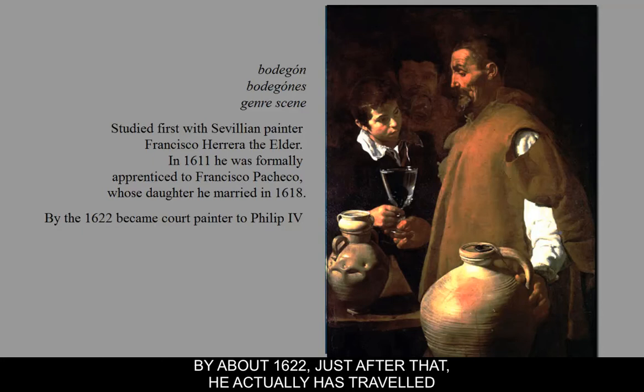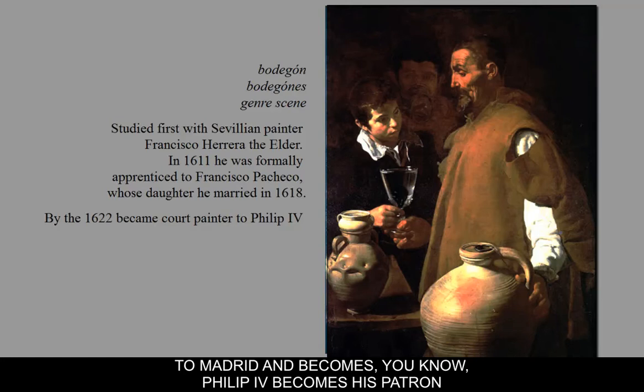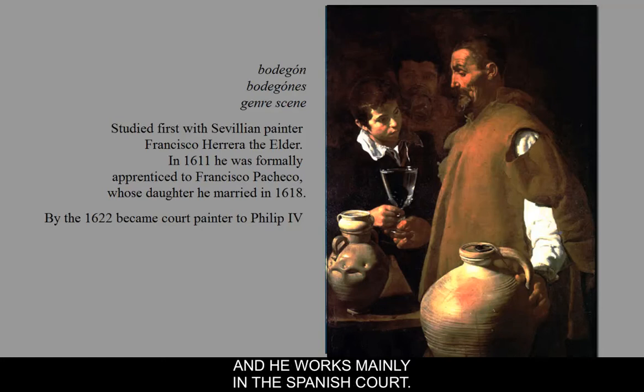By about 1622, he had traveled to Madrid, where Philip IV became his patron. He worked mainly in the Spanish court, and we'll talk about why that's important in a moment.